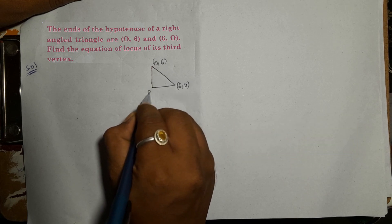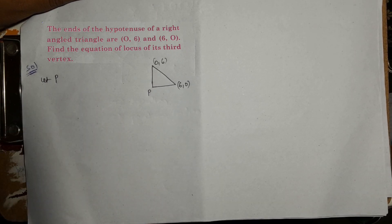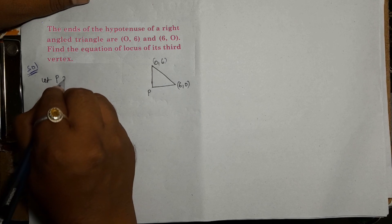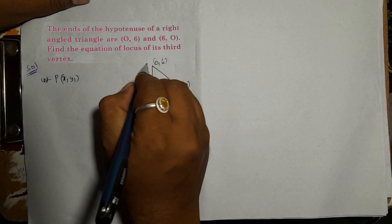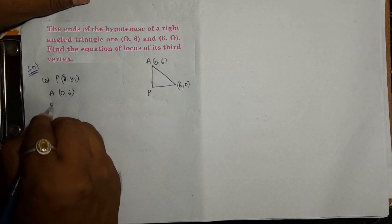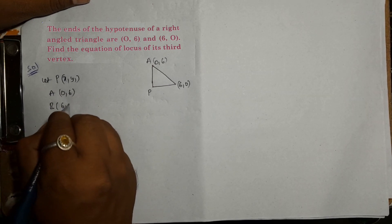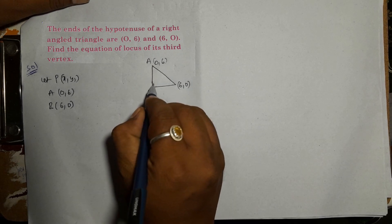Take the third vertex as point P. Let point P be (x1, y1), a point on the locus. Let A = (0,6) and B = (6,0). So P is (x1, y1), A is (0,6), and B is (6,0). A and B are the ends of the hypotenuse, and A, P, B form a right-angled triangle.